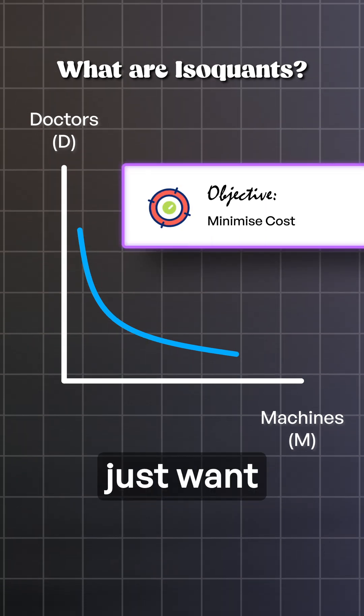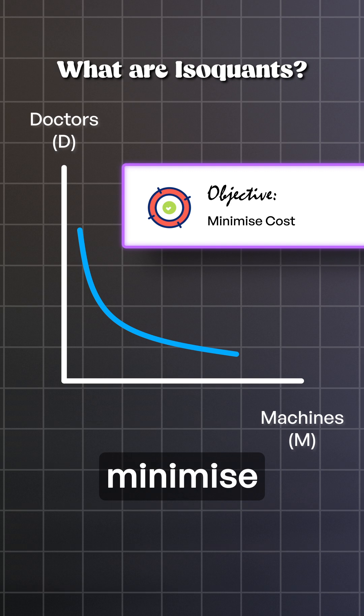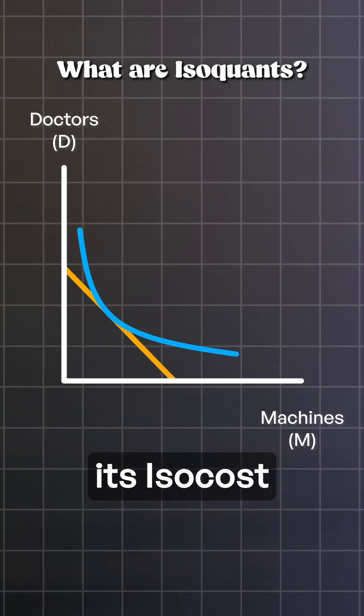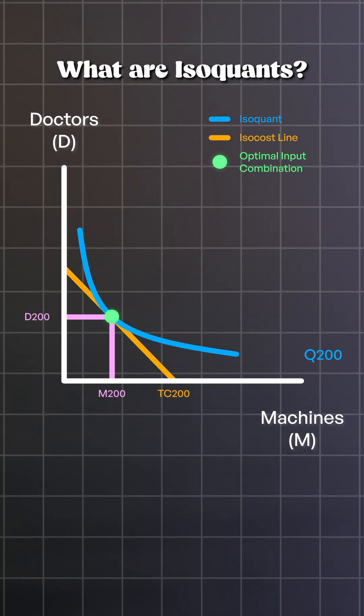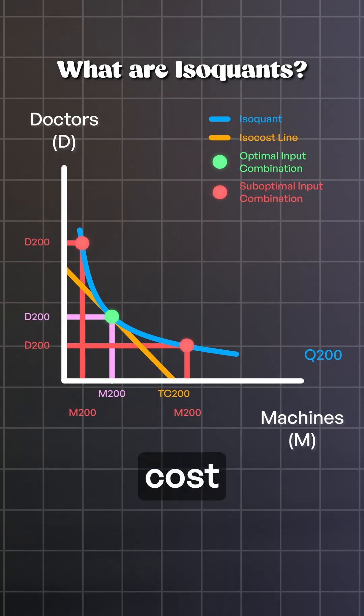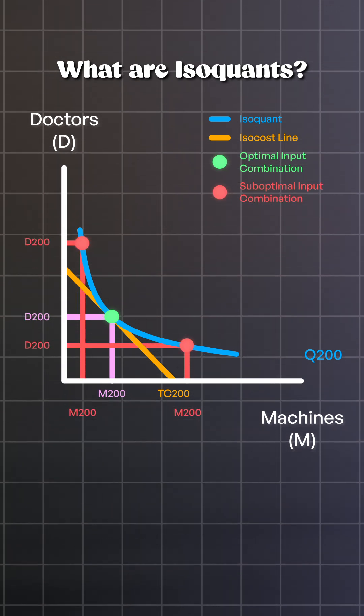Now the hospital doesn't just want to treat patients, it wants to minimize costs. So it looks for the point where its isocost line, representing total cost, is tangent to the isoquant. That tangency point is the most cost-efficient input mix for treating 200 patients.